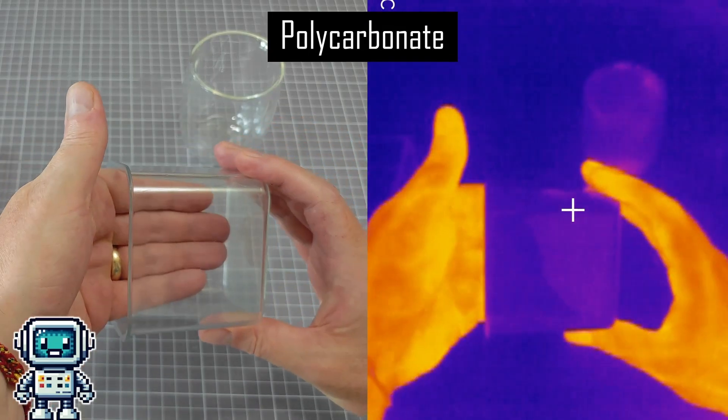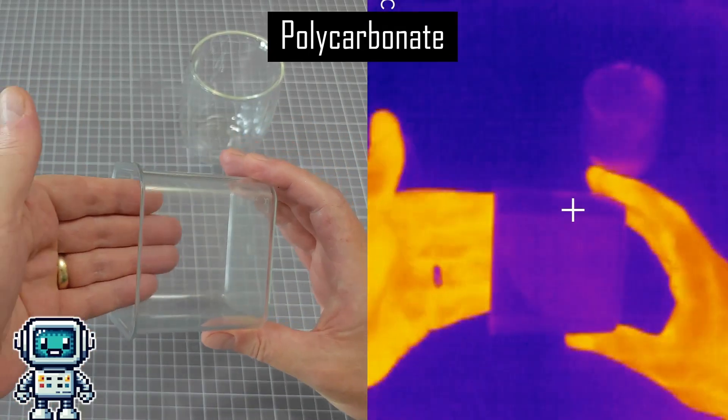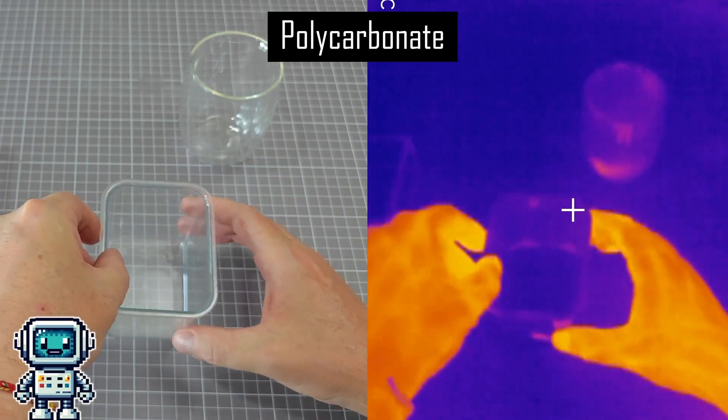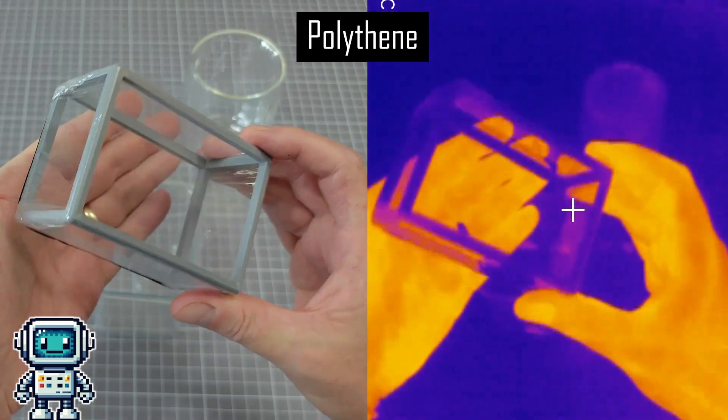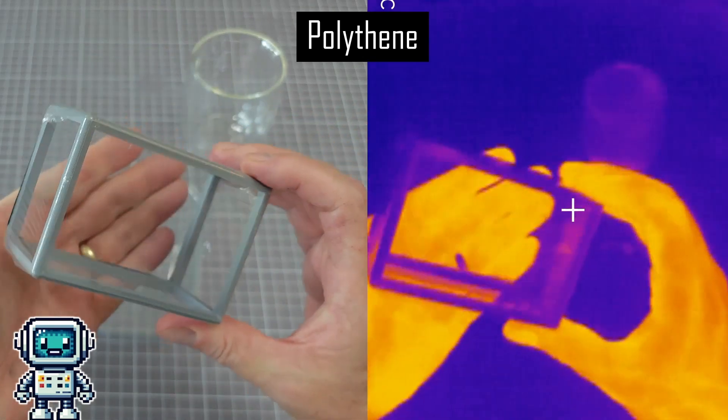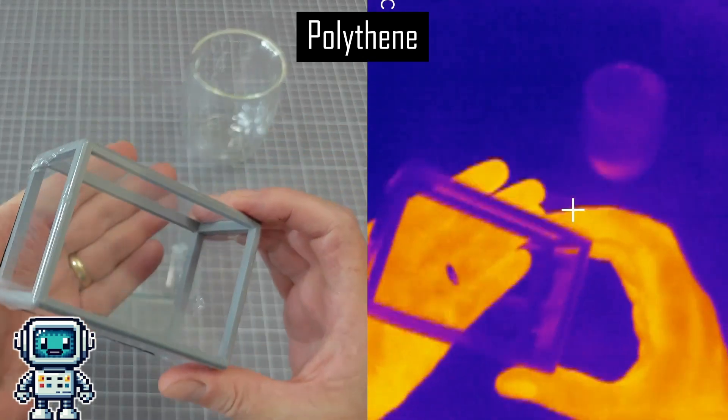Here you can see the comparison between the visible and the thermal infrared views when looking through various materials. But as you can see here, our polythene enclosure is very transparent to both visible and thermal wavelengths.